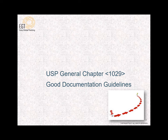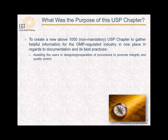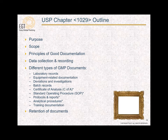Let's focus on GDP, which is discussed in the newly released General Chapter 1029 from U.S. Pharmacopeia under the name of Good Documentation Guidelines. I'm going to start by providing a little bit of history behind this chapter and how it was generated, and what the purpose of this U.S.P. chapter is. The entire chapter is not more than six or seven pages.